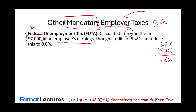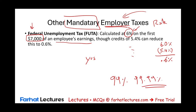On the actual FUTA form, the rate shown is 6%. Further down, the form asks whether you are in good standing with your state — meaning whether you are paying state unemployment tax. Virtually all employers are in good standing, so they receive the 5.4% tax credit and effectively pay 0.6%. The FUTA rate is therefore 0.6%.